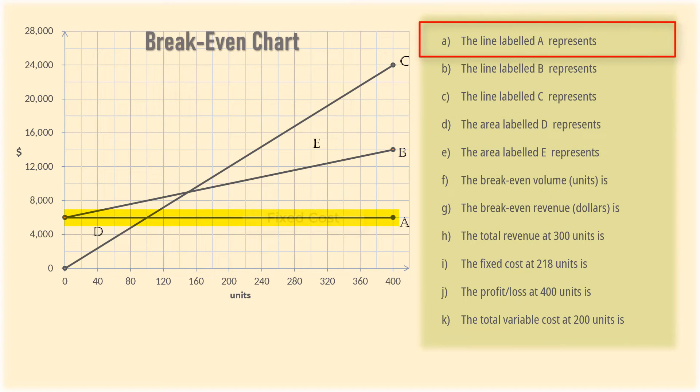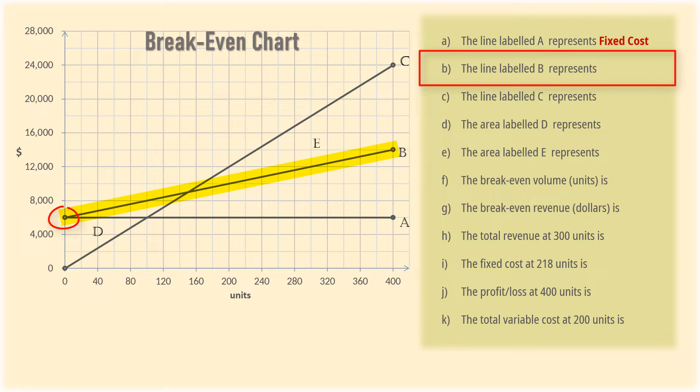The line A here has to be the fixed cost as it remains unchanged irrespective of the number of units. Line B starts at fixed cost and increases gradually with increasing number of units. In essence, it will have its lowest value when units is zero, and that lowest value corresponds to the fixed cost. Therefore, B is the total cost.